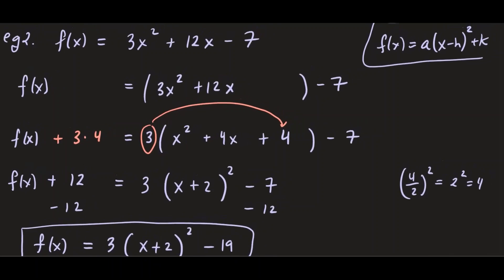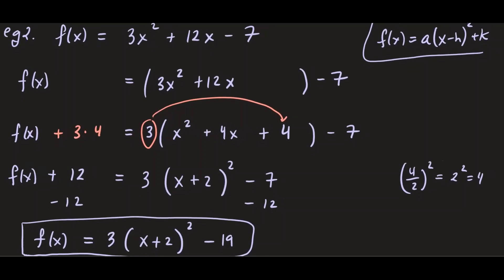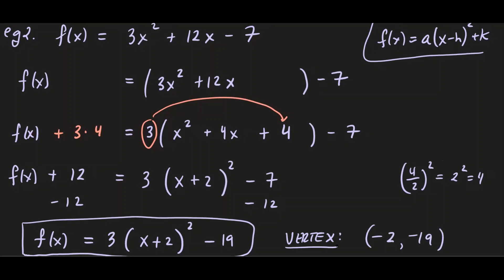From the standard form you can also write down the vertex. The vertex has x-coordinate -2 and y-coordinate -19. There is more you can do with this quadratic, but the purpose of this video is to focus on completing the square and writing a quadratic in standard form.